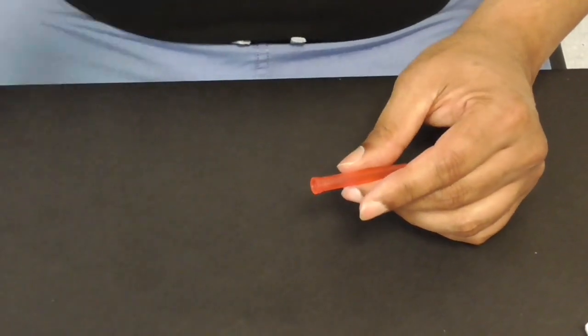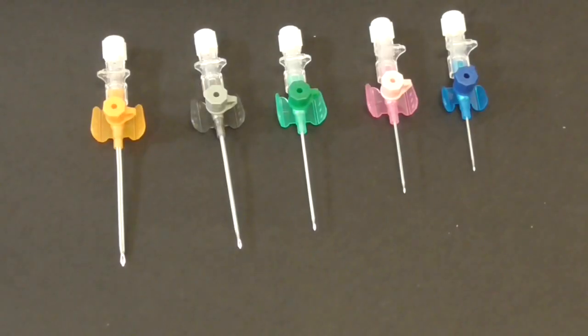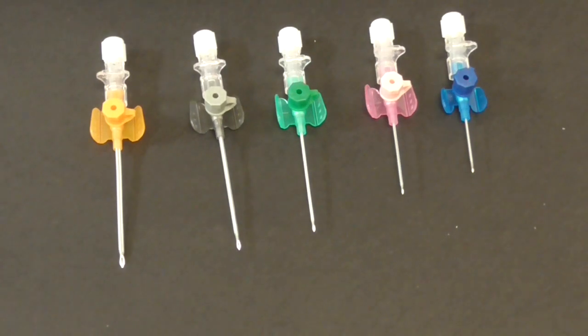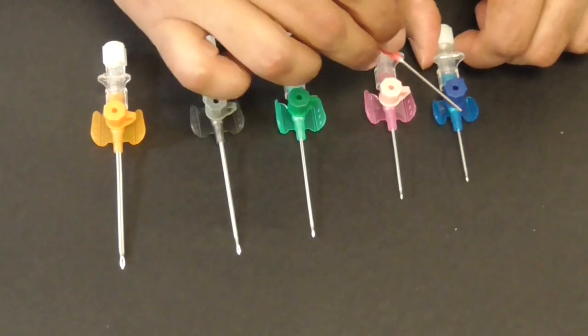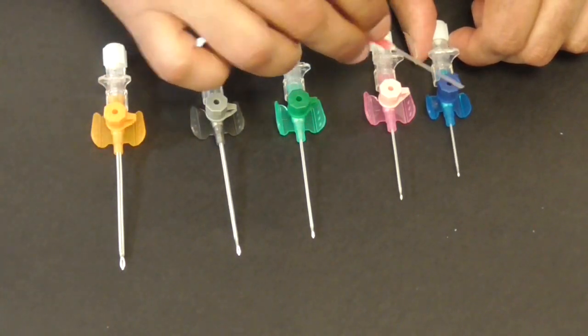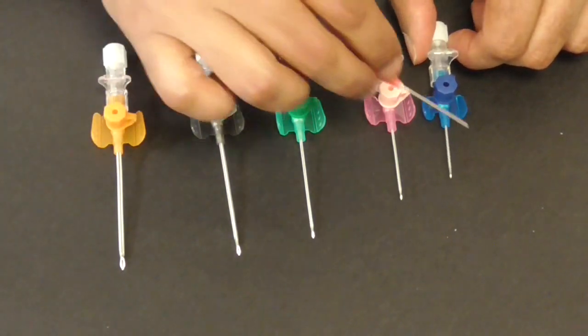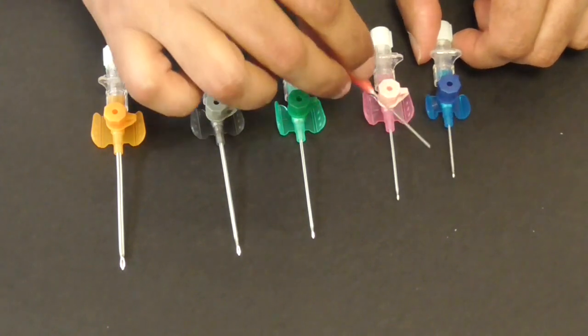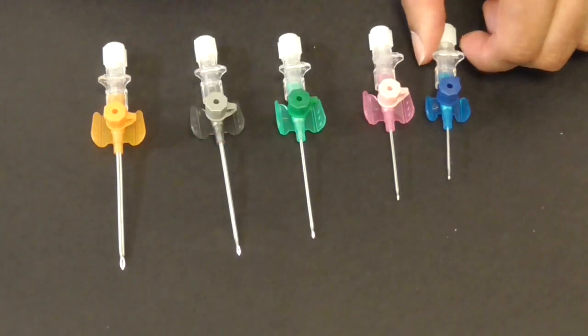So now we're going to talk about intravenous cannulae or venflons as is commonly known after a trade name in the United Kingdom. You can see that the intravenous cannulae all have different colors. These are again color coded much like the needles and each color designates a particular caliber of the needle. You can see the needles have different lengths and the smaller the caliber the smaller the length of the needle but that's not the point.